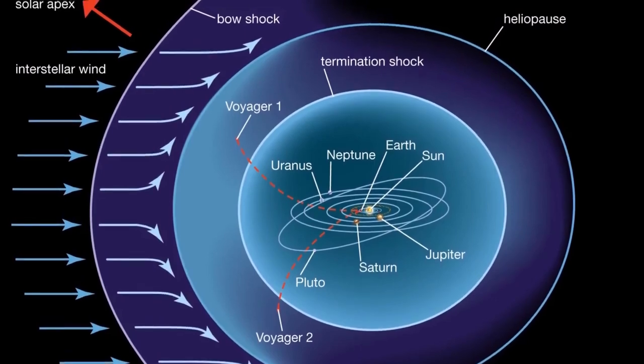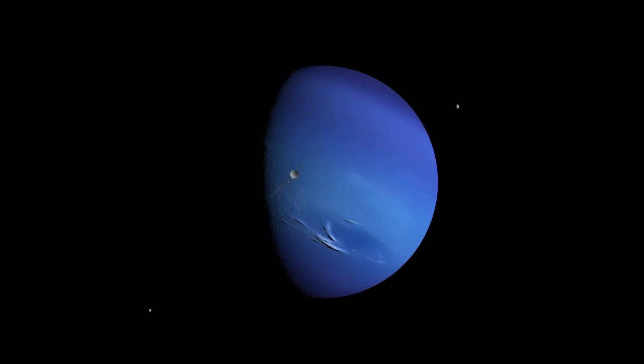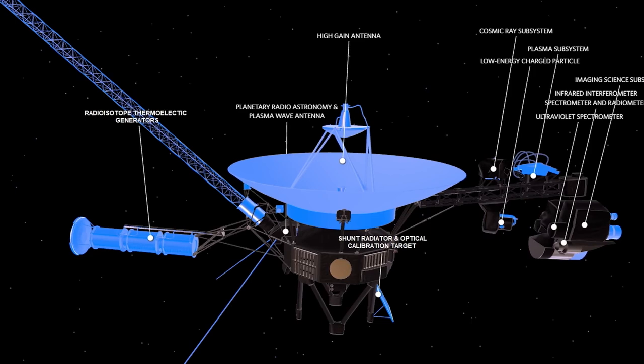However, we still lack information about the heliosphere's wake, leaving its overall shape uncertain. The heliosphere could be spherical due to interstellar medium pressure, but it's also possible it has a comet-like tail or a crescent-like shape.